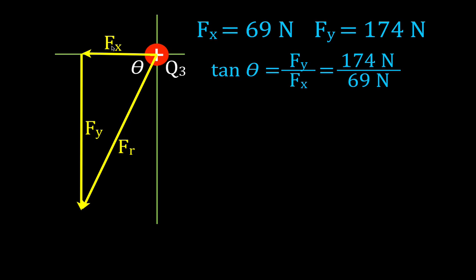Divide that, I get the tangent of the angle is 2.52. I have to take the inverse tangent, I get theta. And this angle right here is 68 degrees. So this angle is 68 degrees. If you start with this x-axis is 0, you go all the way around, it's 180 plus that, and you get 248 degrees.